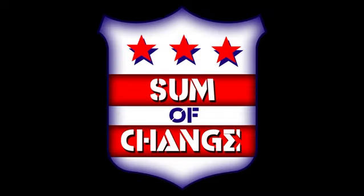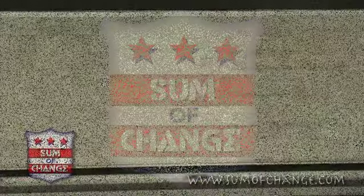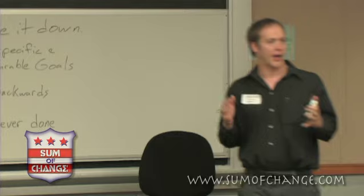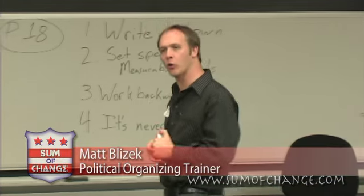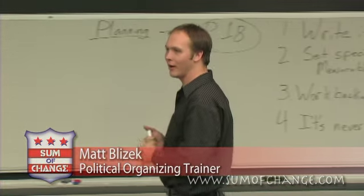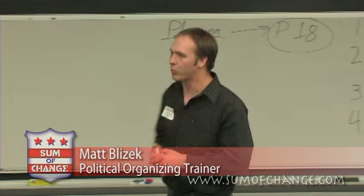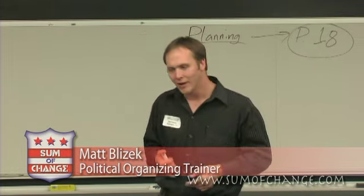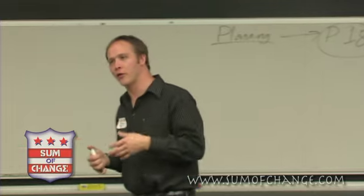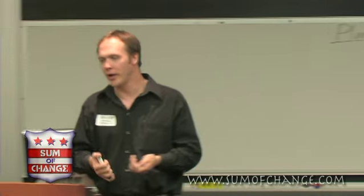Our second principle is we need to be specific with the goals we set. We talked about this — how we set our vote goals, how we do the real hard math for it. These aren't approximations. We need about 2,000 votes? No — we need 2,119 votes. We need specific goals that are clearly spelled out, including how you got to setting those goals.